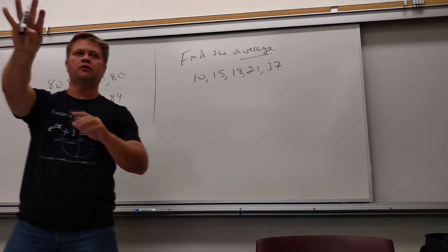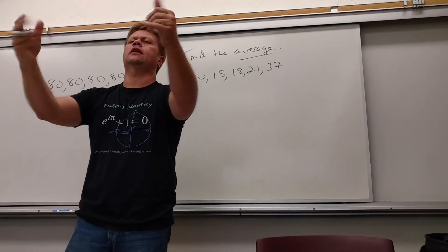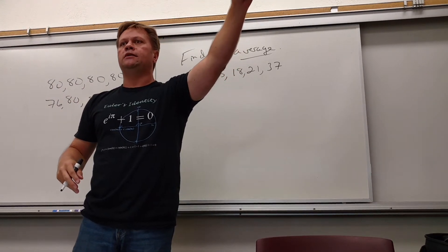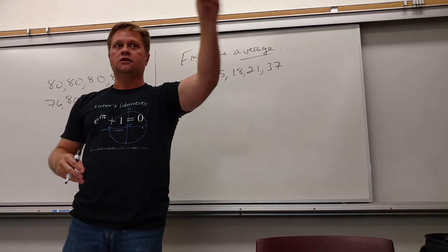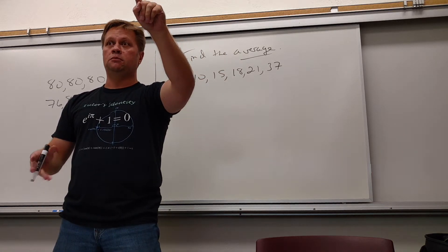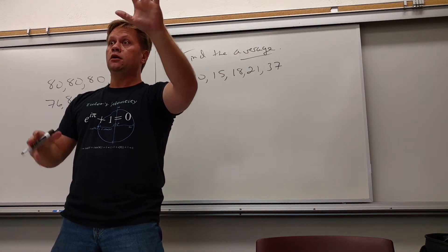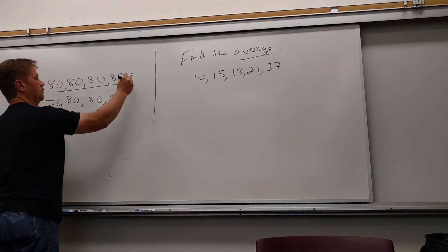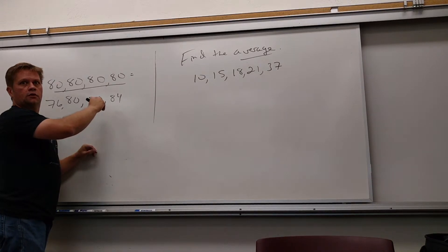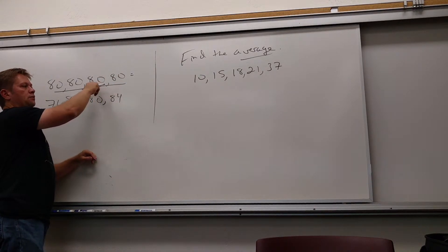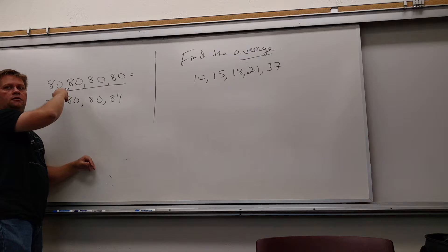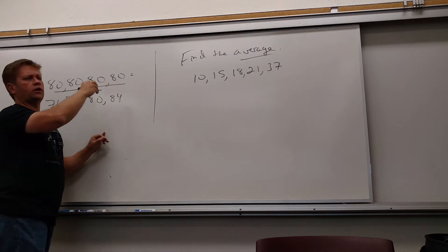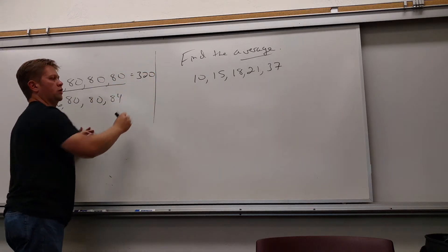If I say the average of four numbers is 80, stay with me. If I said the average of four numbers is 80, one of them could be 18 billion as long as the next one's like negative 18 billion. Are you kind of with me? As long as the sum still comes out to be a certain thing. What do these add up to be? What's 80 plus 80 plus 80 plus 80? What's four times 80? 320. 320.